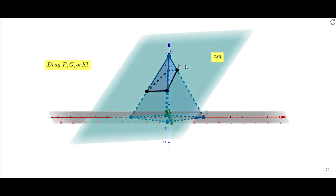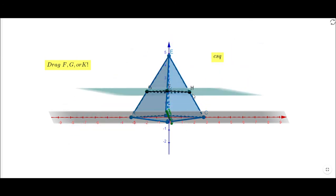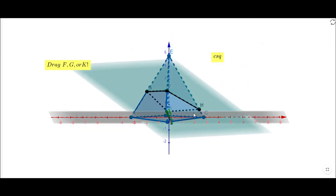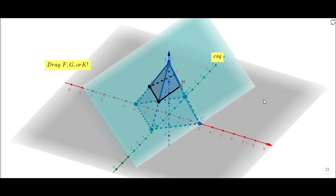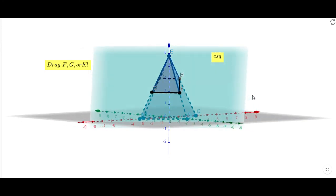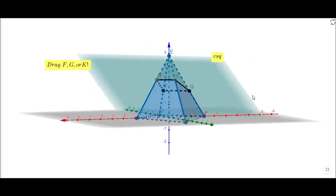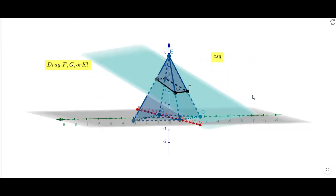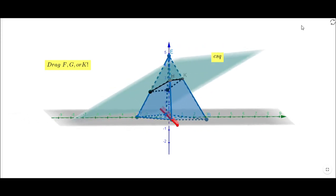Think about what other cross-sections there are — there are some special cases you do not see here. Don't forget you can rotate this. If you enjoyed this, don't forget to click the like button and come back to C-Square for more help. Thank you.